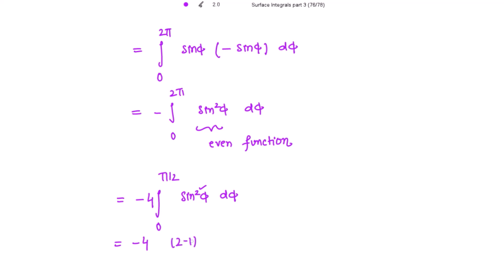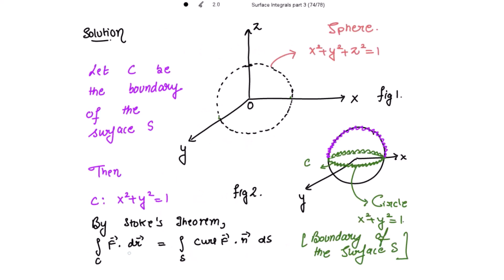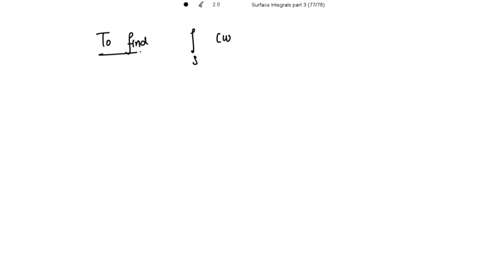In the numerator we get 2−1 = 1, and in the denominator we write 2−2 = 0. Since we have an even power, we multiply the result by π/2. So the numerator is 1 and we multiply by π/2, giving −4 · (1/2) · (π/2) = −π. So the line integral of f vector dot dr vector equals −π. Mark this as result (1). For Stokes' theorem, the left-hand side is −π, and the surface integral should also equal −π.